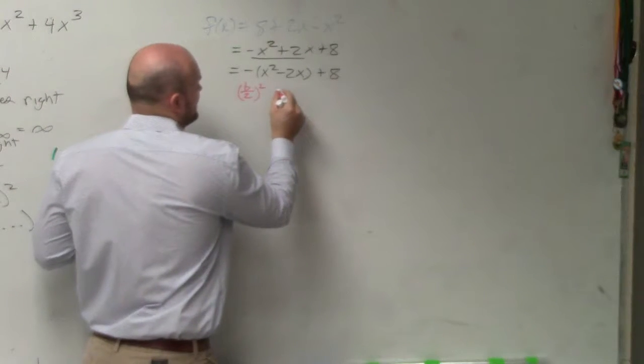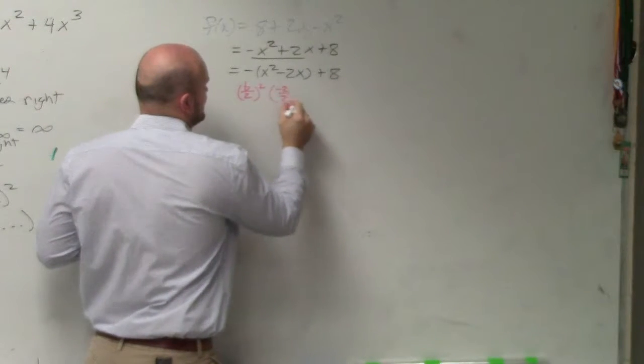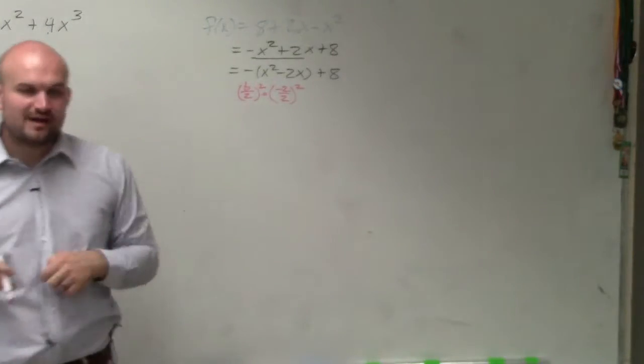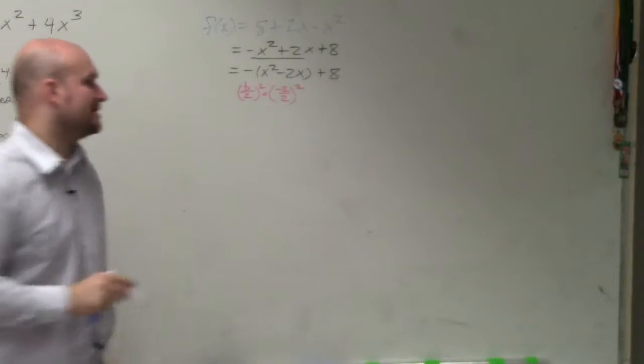Negative 2 divided by 2 is negative 1. Negative 1 squared is positive 1.